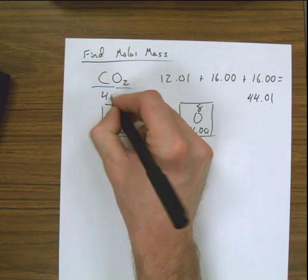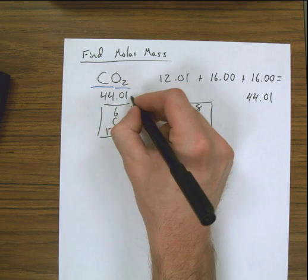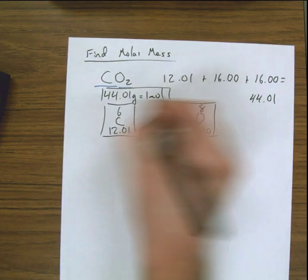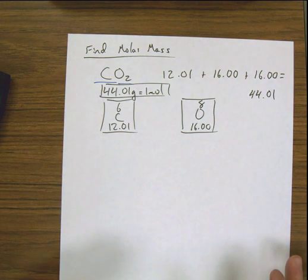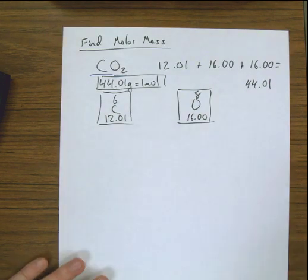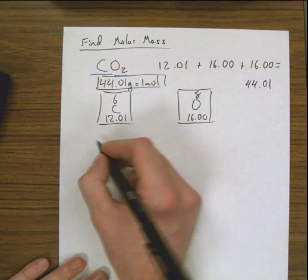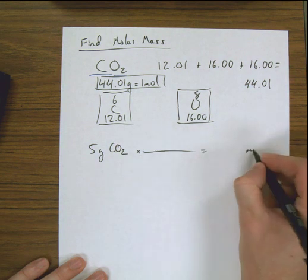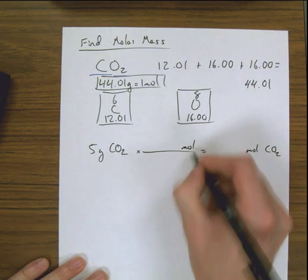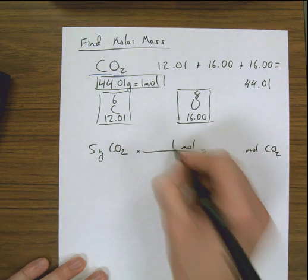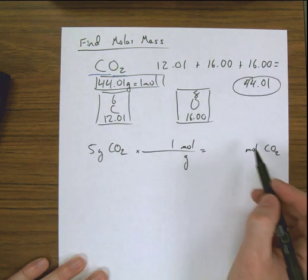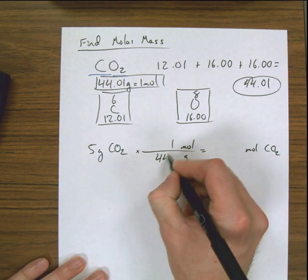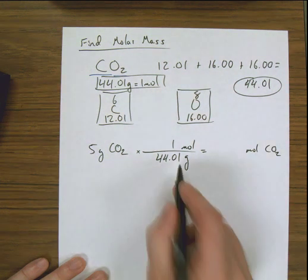The molar mass for carbon dioxide is 44.01 grams equal to one mole. Once you have this information, you can convert between moles and mass for a molecule. If I have 5 grams of carbon dioxide and I want to go to moles, I set up the fraction with moles on top — moles is always 1 — and the molar mass of 44.01 grams on the bottom. Dividing those two numbers gives your answer.